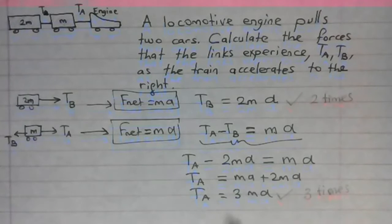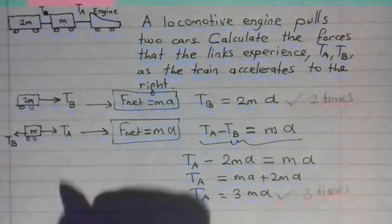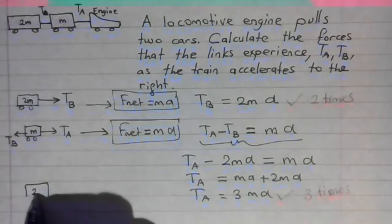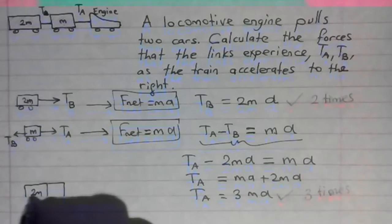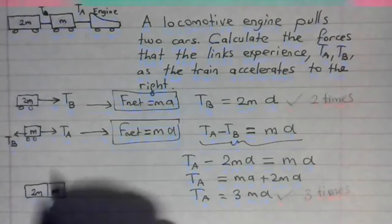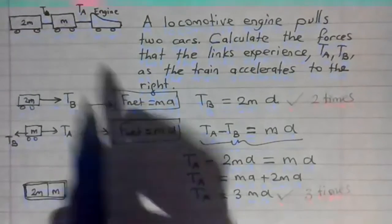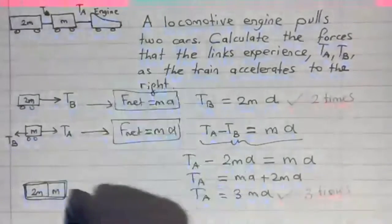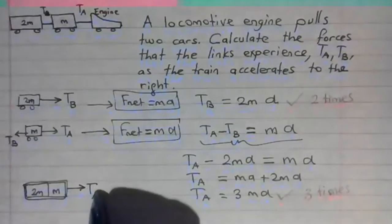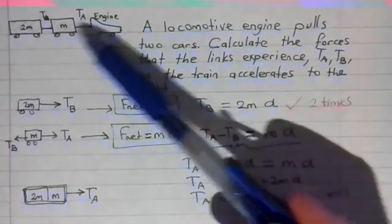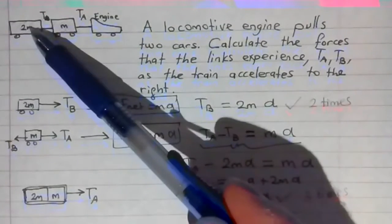Another way of finding TA is considering these two cars as one single body. You can think that 2M and M are united. There is no link, no TA link. This whole thing is now pulled forward by a force called TA. So we can see that TA is already pulling not only M but also pulling 2M as well.